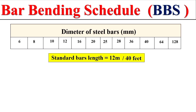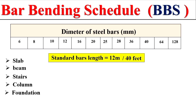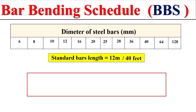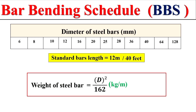Dear students, if we need to find the Bar Bending Schedule and we know the diameter of the bar and the total length of the bar — whether it is in slab, stair, column, or foundation — there is a formula to calculate the total weight of steel: D squared divided by 162, with unit in kg per meter. Here D is the diameter of the bar.